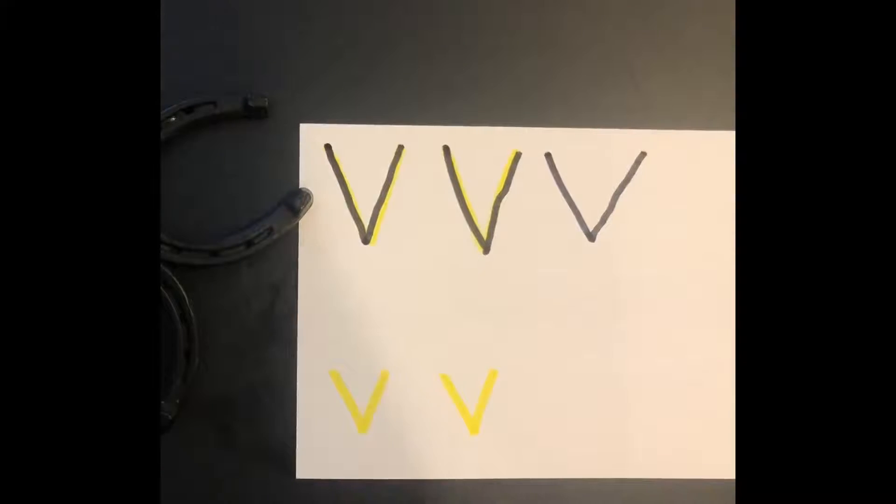For a lowercase V, it's just like an uppercase V. The letter looks exactly the same, except that this one is little. So if you're writing on paper that has lines, your lowercase V will only go to the middle line. It will not go all the way to the top.